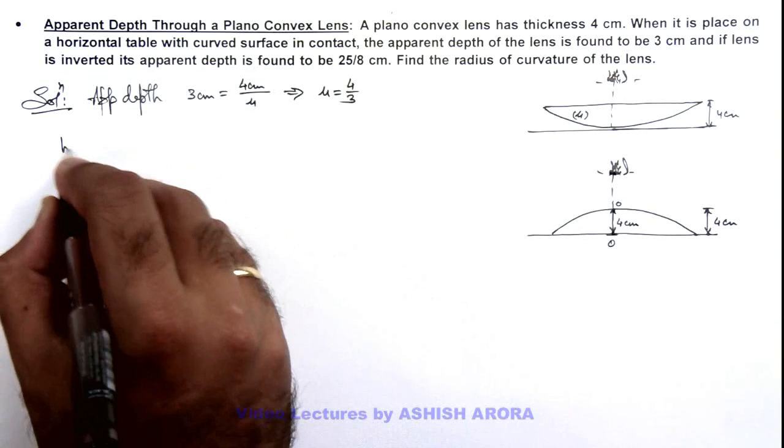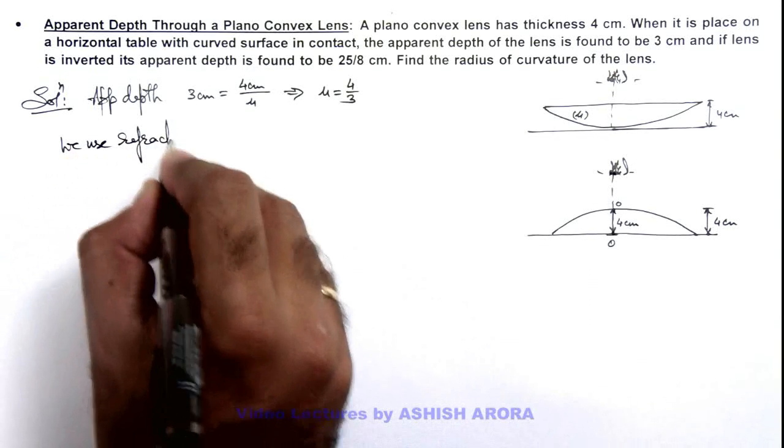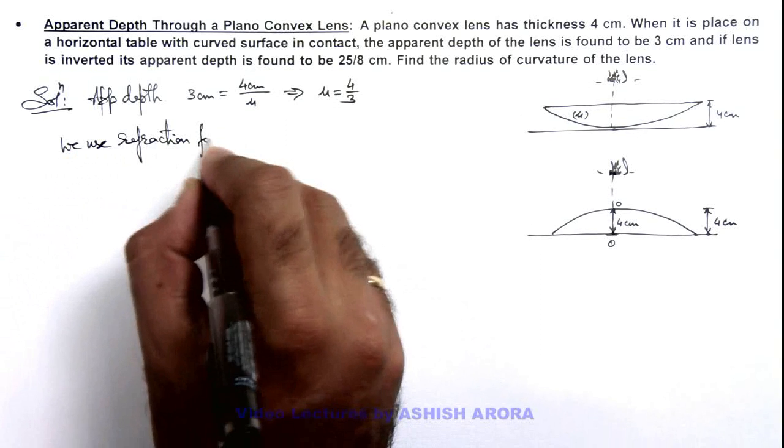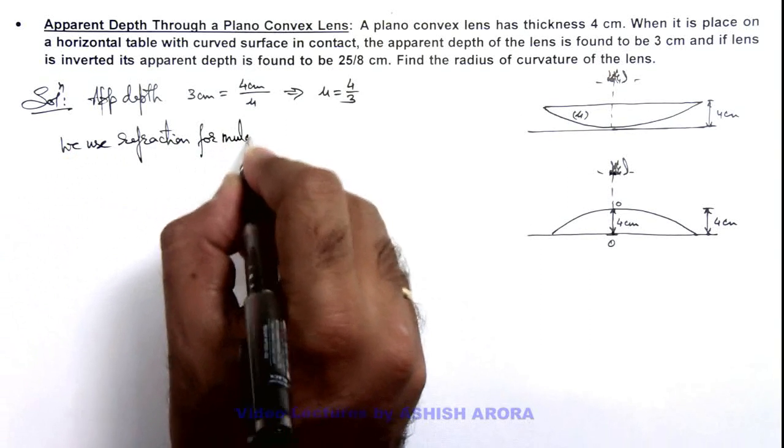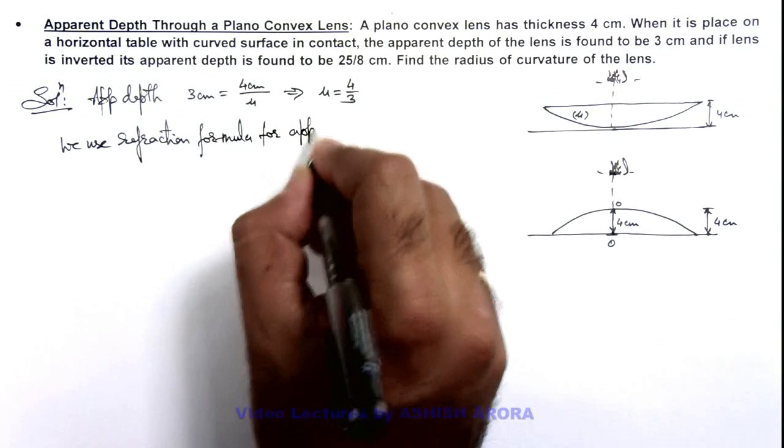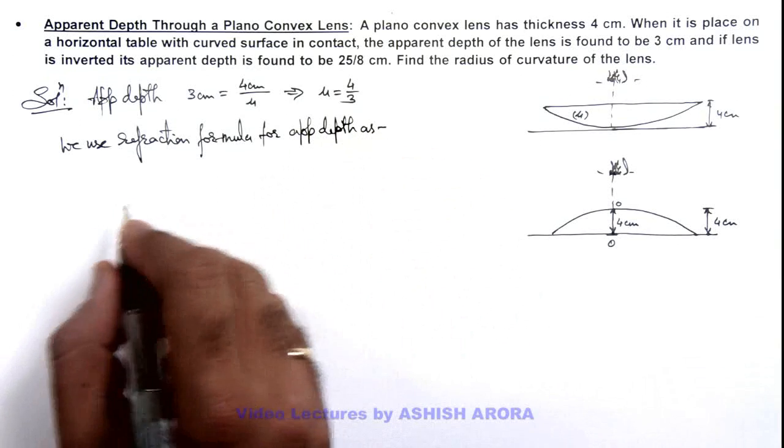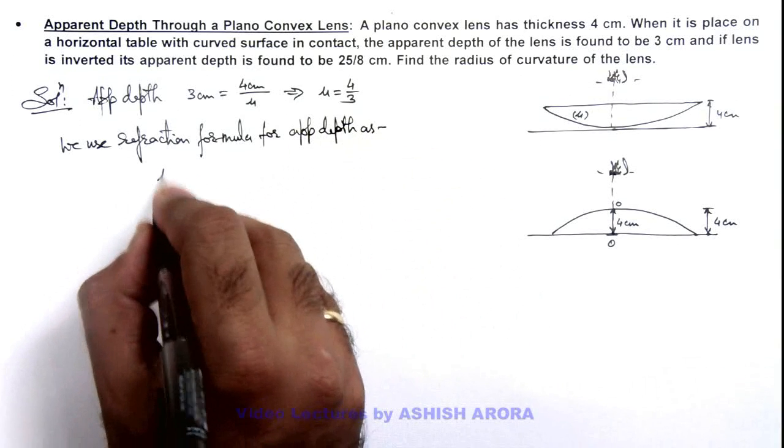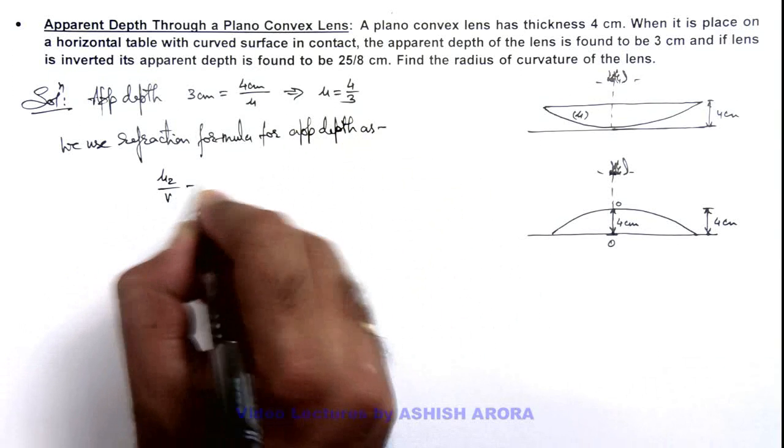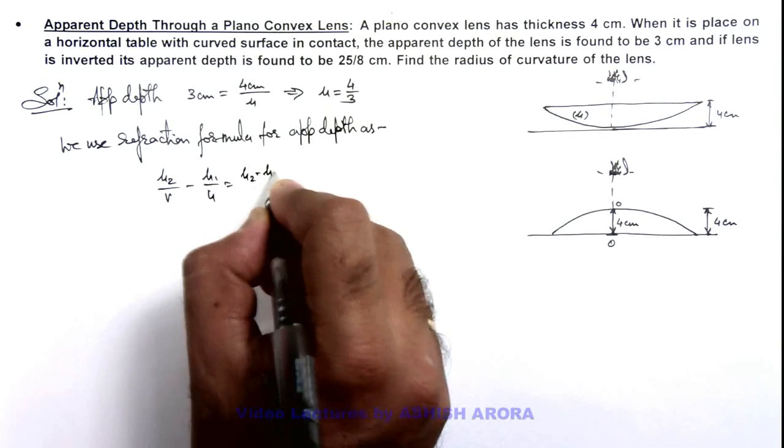Here we use the refraction formula for apparent depth. In this situation, we use it as μ₂/v - μ₁/u = (μ₂ - μ₁)/R.